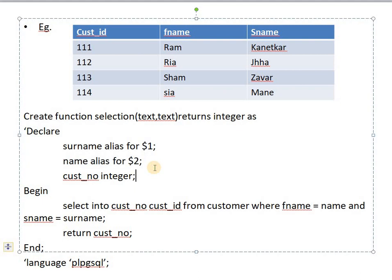$1 and $2 are used when the user passes arguments to the function. However, for variables that store a result returned by the function, you must explicitly provide the data type. After the declaration section, the actual procedural block begins with the BEGIN keyword, which indicates the start of the procedure logic.